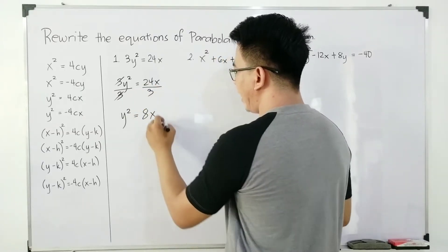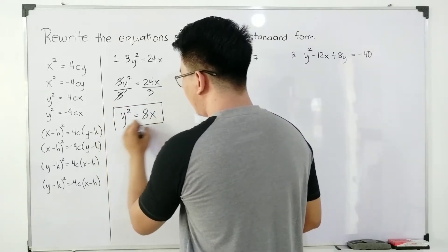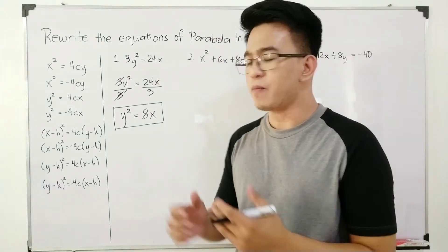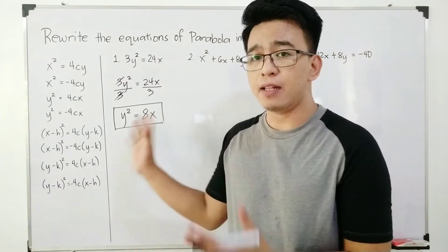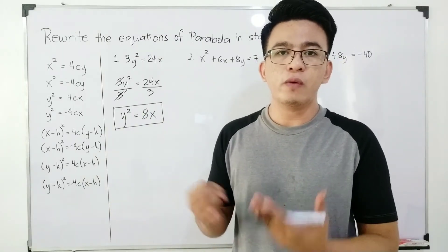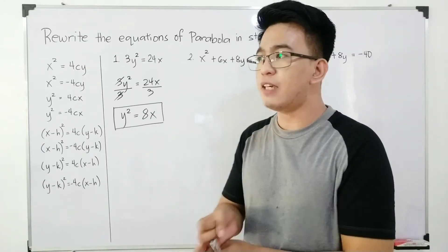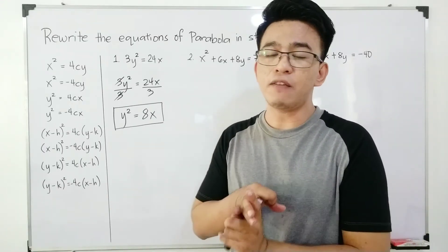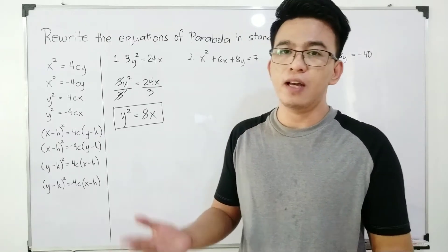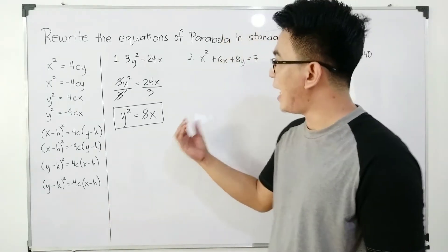Then we have y² = 24/3, which is 8, and then we have x. So the importance of knowing how to transform the equation of a parabola into standard form is that we will be able to determine the vertex, the equation of the directrix, the length of the latus rectum, and the equation of the axis of symmetry. Now we are done with item number 1.